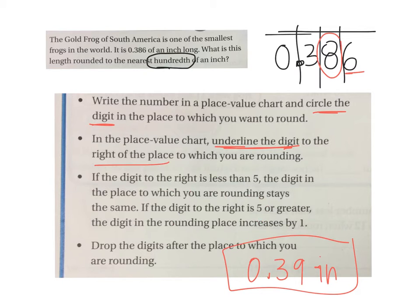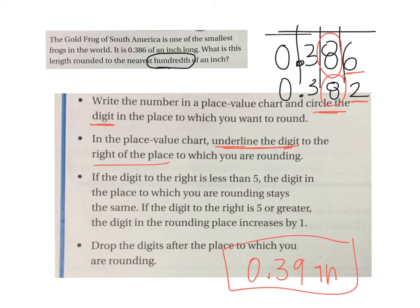You look at the underlined digit and ask: is it five or greater, or is it less? If it's five or greater, the circled digit gets bumped up by one and you drop the digit to the right. Since we're rounding to the hundredths, we don't care about the thousandths anymore. What if the number was 0.382? We'd circle the hundredths place and underline the 2 to the right. Two is less than five, so it stays at thirty-eight hundredths.